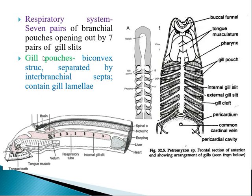The respiratory system consists of seven pairs of branchial pouches leading out from the pharynx, which acts as the respiratory tube. The sides of the pharynx have perforations called internal gill slits, leading to the branchial or gill pouches. Water enters through the buccal cavity, reaches the pharynx, passes into the gill pouches through internal gill slits, and exits through external gill slits.